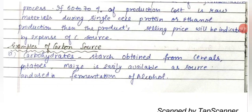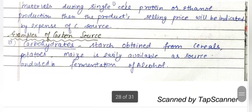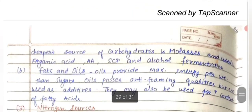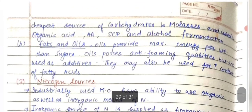What are the carbon sources? The first is carbohydrates. Starch obtained from cereals, potatoes, and maize is easily available and can be used as a source of carbon. It is used in the fermentation of alcohols and is the cheapest source of carbohydrate.